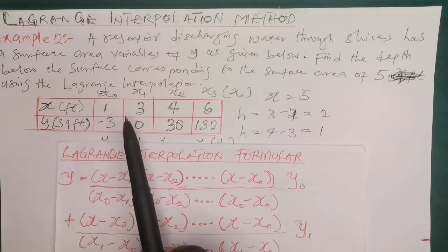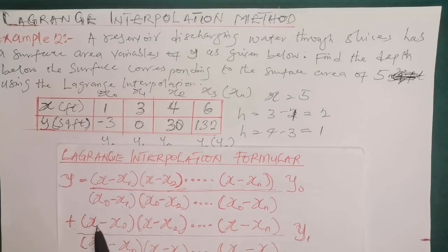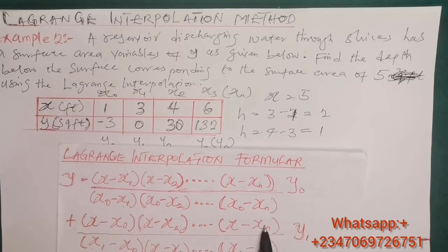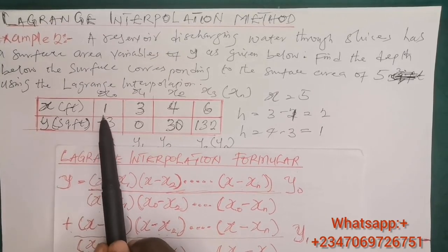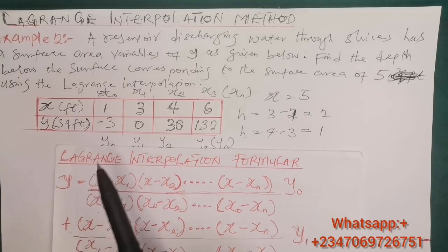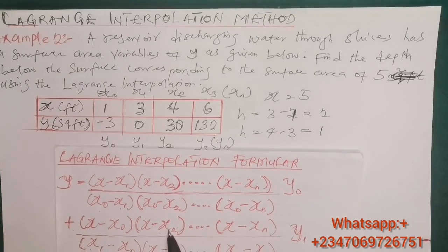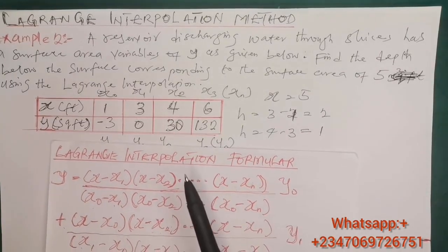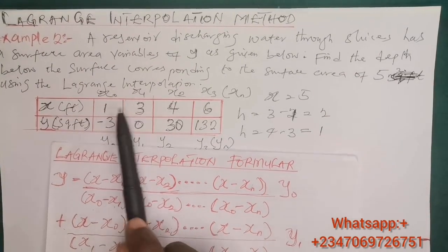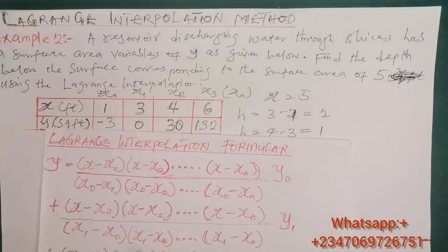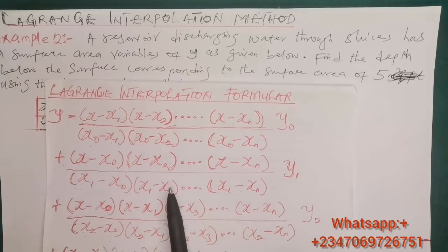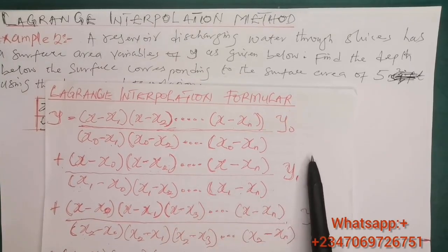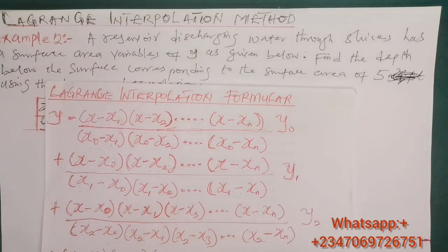Then we add the next term. Moving to column x1, we do not repeat x1 in the numerator — it comes in the denominator. The numerator becomes x minus x-naught, times x minus x2 (skipping x1), times x minus x3. The denominator is x1 minus x-naught, times x1 minus x2, times x1 minus x3. Multiply the result by y1. We continue this process until all values of x are exhausted.